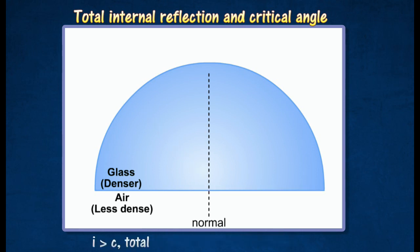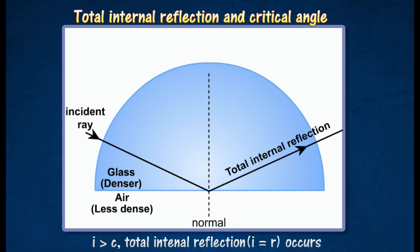If the angle of incidence is greater than the critical angle c, the ray will be reflected back into the denser medium instead of emerging from glass into air. This is known as total internal reflection.